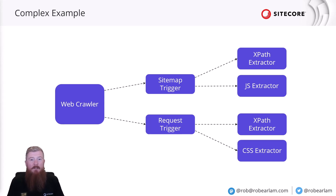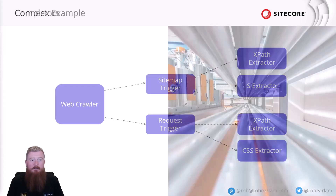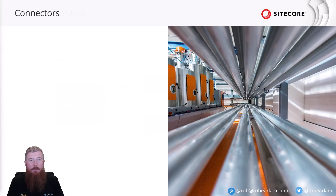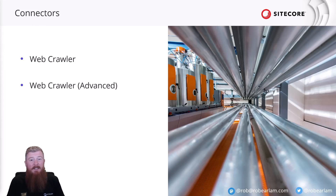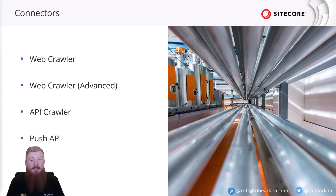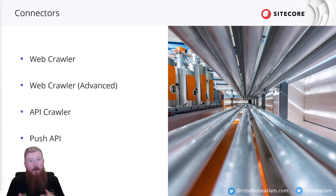Before we take a look at how the different sources for the developer portal have been configured, I want to quickly walk through the different types of connectors, triggers, and document extractors available to you. There are four different types of connectors. The first two are the web crawler and web crawler advanced, designed for crawling websites. Next is the API connector, designed to make REST requests to an endpoint that returns the data needed. Finally, the push connector is quite different — while the first three work on a pull model where Sitecore Search pulls the data, the push connector relies on a third-party system pushing data into search.